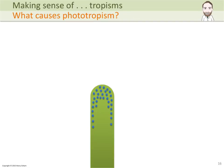Here is the tip of a growing shoot, and the little blue circles here are the auxin molecules that you find at the tip of a growing shoot. The way auxin works is that it increases the amount of cell division and cell elongation. So at the tip of the shoot, the auxin is causing the shoot cells to divide and to elongate, and so that shoot is growing.